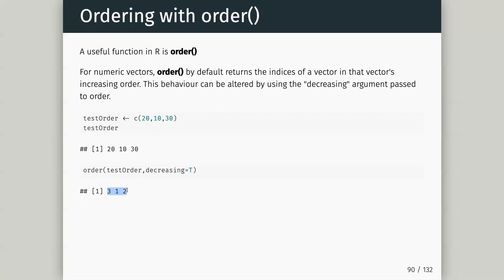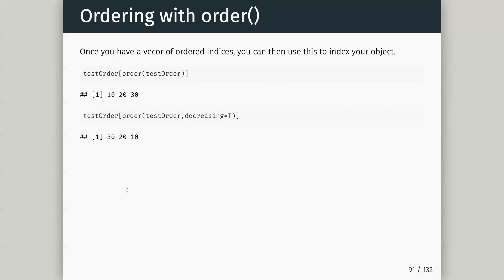If I change decreasing — if I don't set decreasing as TRUE — it would do it in the opposite order. By returning these indices to us, we can slide that into the square brackets and get our vector back in the right order. So if I do order without decreasing TRUE and supply that within square brackets I get the reordered vector; with decreasing TRUE it gives the highest first.